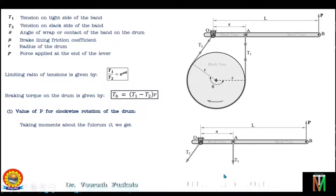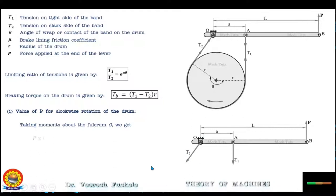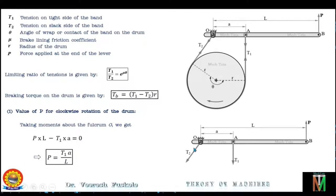Further, tension T1 will rotate the lever in the clockwise direction about fulcrum O, so the moment will be negative with magnitude T1 multiplied by the perpendicular distance of its line of action from fulcrum O, which is A as seen in the figure. Since tension T2 passes through the fulcrum point, its moment about O will be zero. So the moment equation is PL − T1·A = 0, giving us P = T1·A / L. This is how you calculate the applied force for clockwise rotation of the drum.